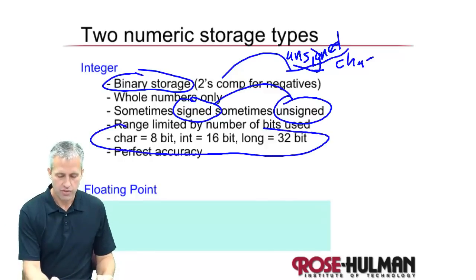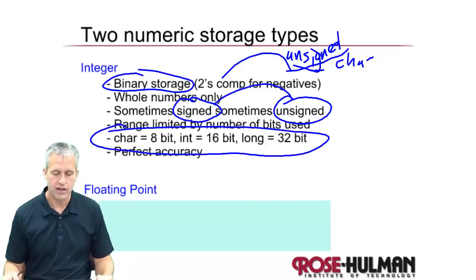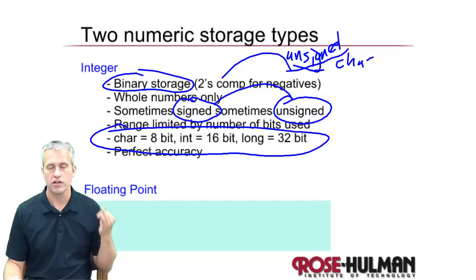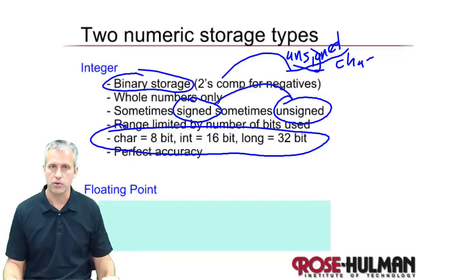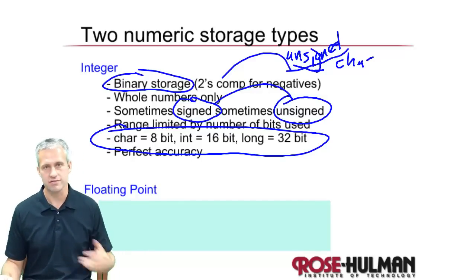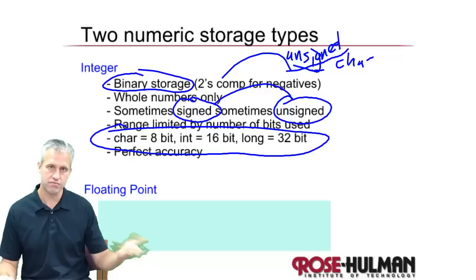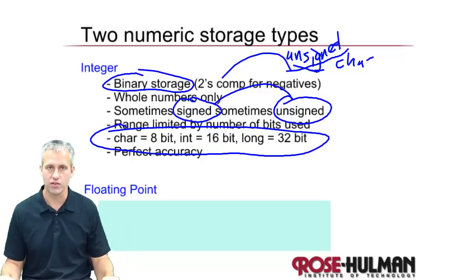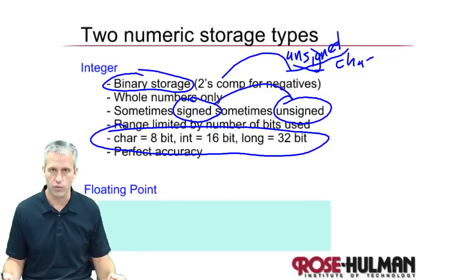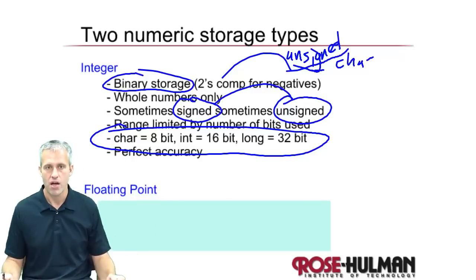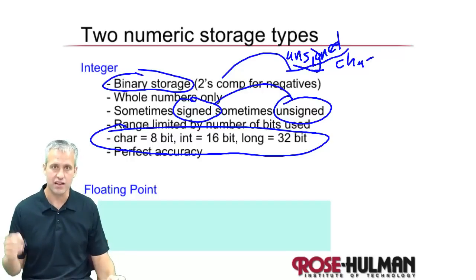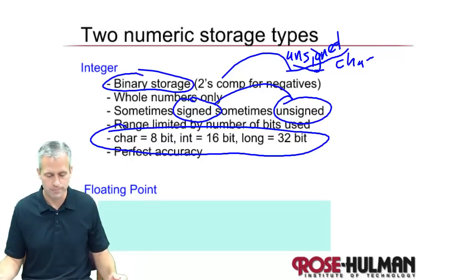The names for the three different integer data types are char, int, and long. Char is the only one that ever confuses people because they think it has to be a character — but no, it's just 8 bits. It's called char because it fits a character very well. Better names would have been int8, int16, and int32, but oh well.